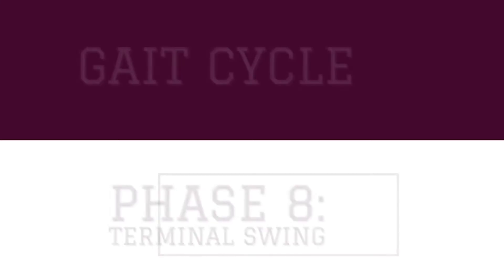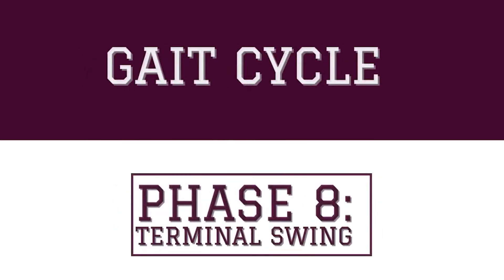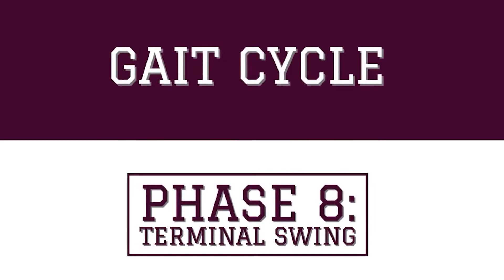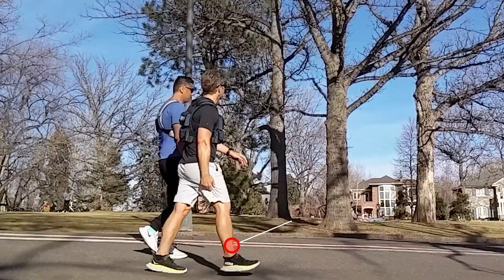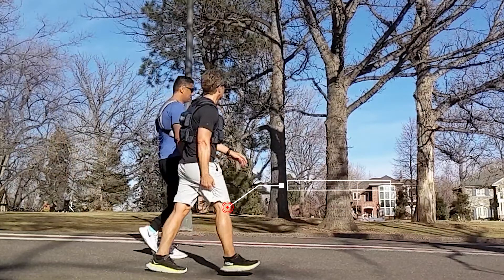The eighth phase of the gait cycle is terminal swing. Applying our strategy of ankle, knee, and hip — first, looking at the ankle, the anterior tibialis is isometrically contracting to keep the ankle in neutral dorsiflexion. This is crucial for heel strike to occur.